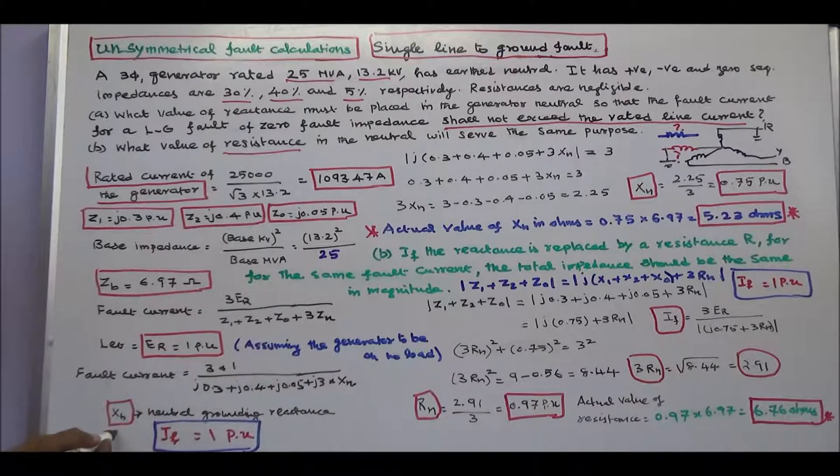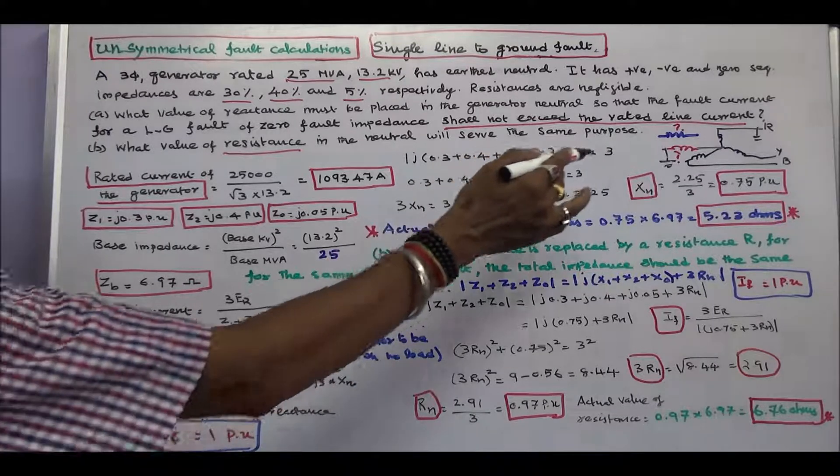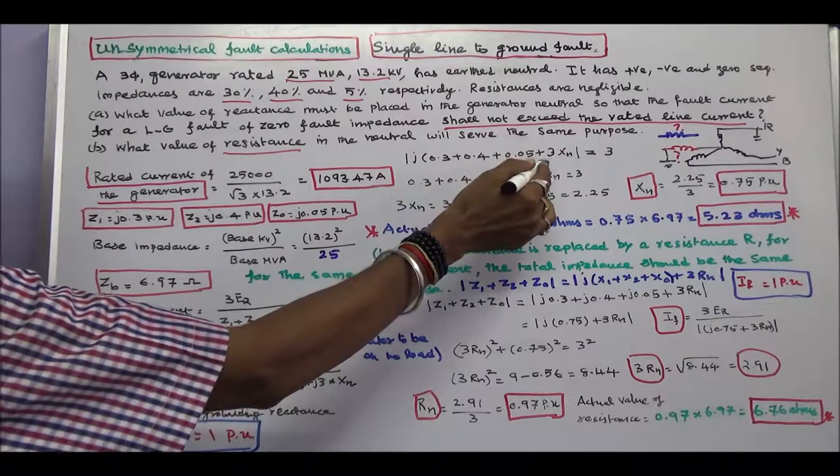Here, where Xn is the neutral grounding reactance. Let me assume fault current is equal to 1 per unit. Therefore, 3 is equal to modulus of j0.3 plus 0.4 plus 0.05 plus 3 into Xn.